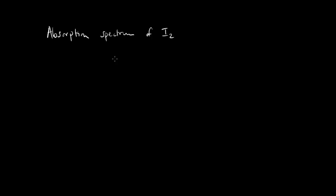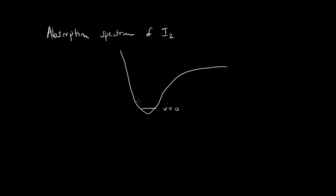Let me draw out an electronic potential energy surface like so. And let me draw in the V equals zero level. I can draw in a couple more levels if I wanted to, like so. And then let me draw in a random level up here, which I'll call V.